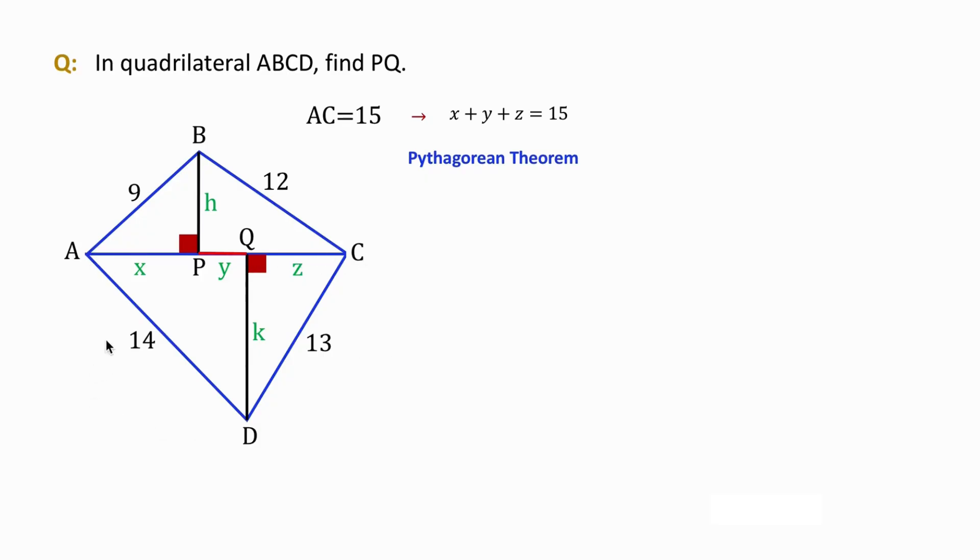For the top left right triangle ABP, we can write the Pythagorean theorem as equation 1. And for the top right triangle B, C, and P, we get the second equation.